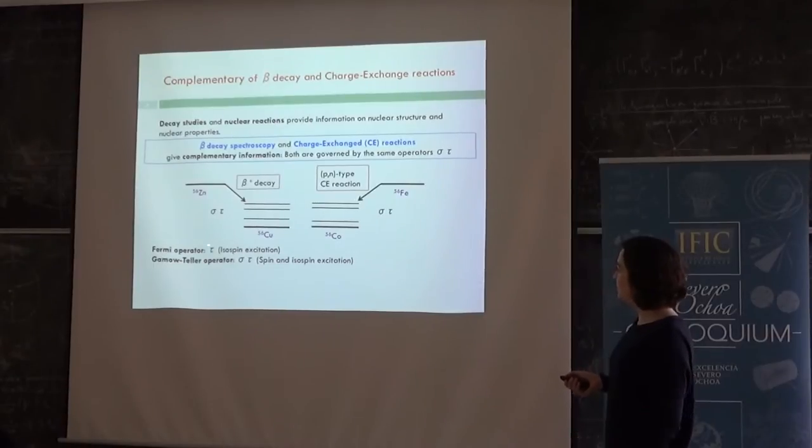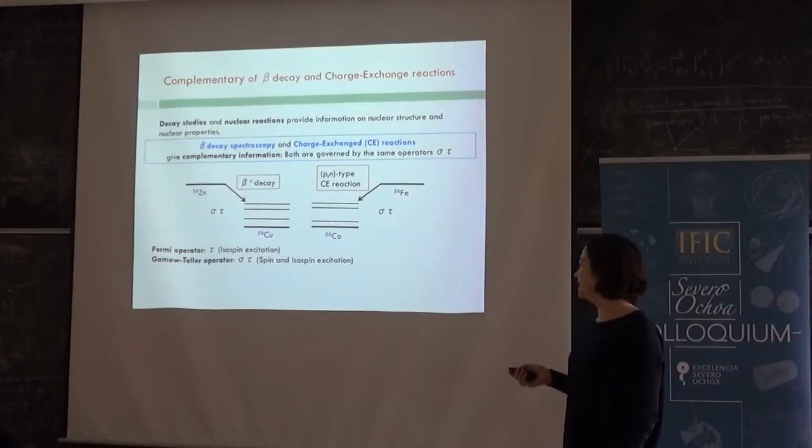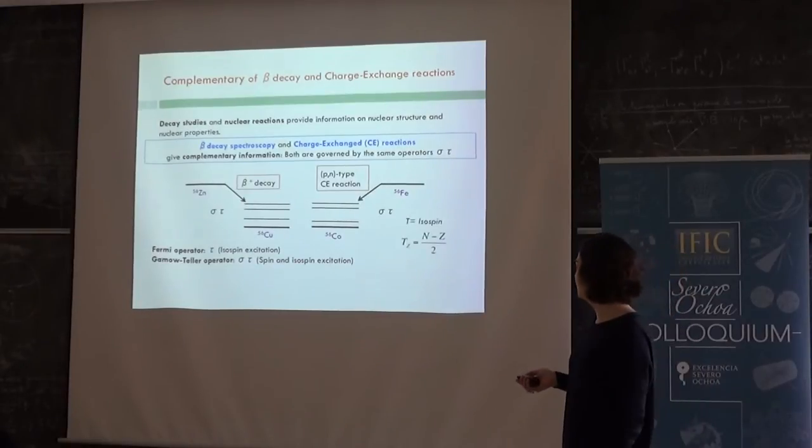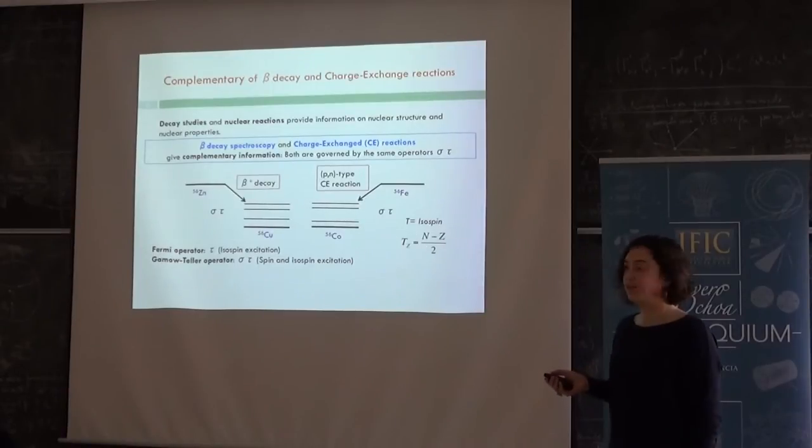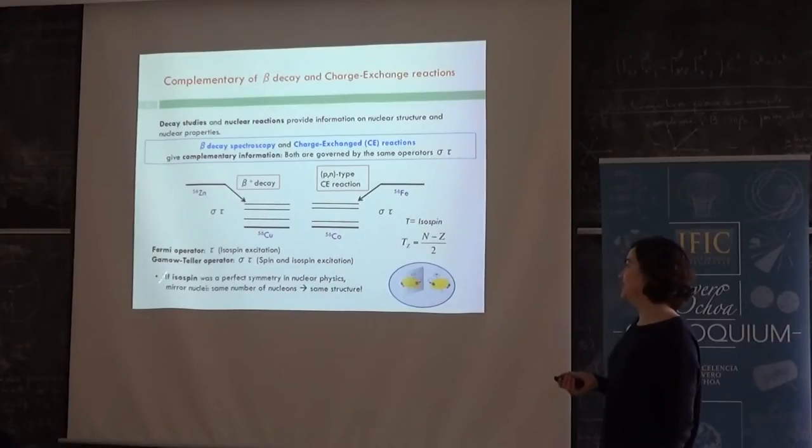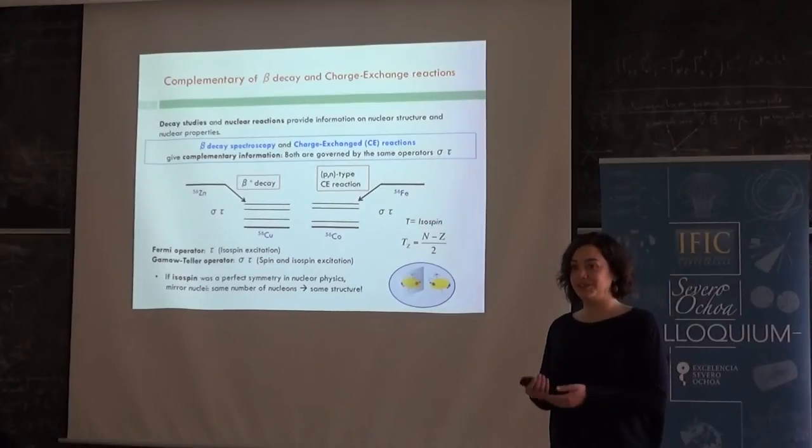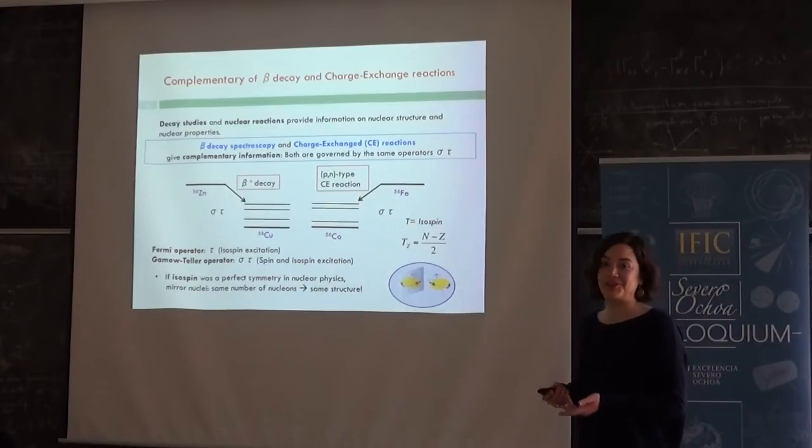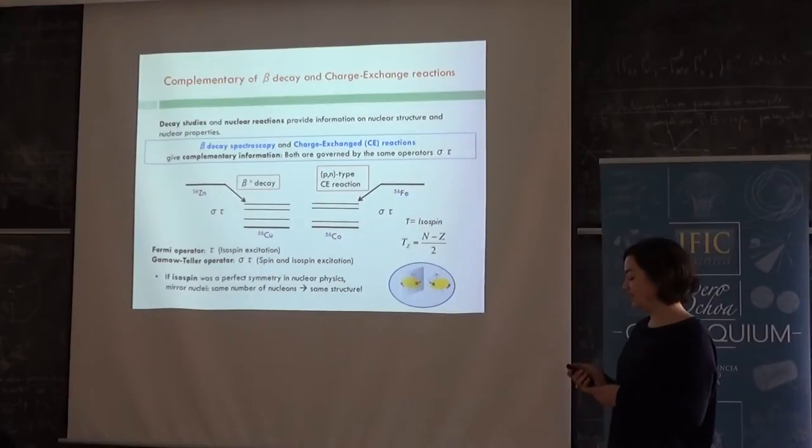And they are different methods, but because they are governed by the same operators, they give complementary information because they produce mirror transitions. The Fermi operator is the tau operator and this produces isospin excitations. And the Gamow-Teller is the sigma tau and produces isospin excitation also, but also spin excitation. So if T is the isospin, the third component of the isospin is defined like that. So when you have one of those decay or reactions, in the nucleus this third component of the isospin changes. And if the isospin, if it was a perfect symmetry, which is not, but if it was perfect, mirror nuclides would have identical structure. They don't have identical structure because isospin is not perfect, but nevertheless it can give us very useful information. If you know one nucleus, so also having information of its mirror is very important.